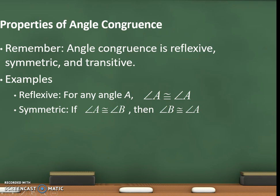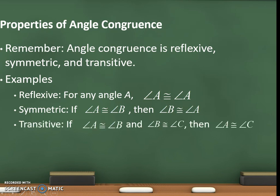Symmetric: if angle A is congruent to angle B, then angle B is congruent to angle A. Transitive: if angle A is congruent to angle B, and angle B is congruent to angle C, then angle A is congruent to angle C.